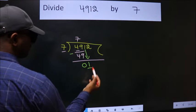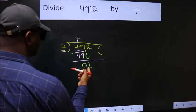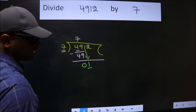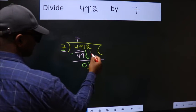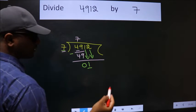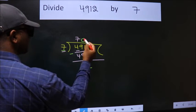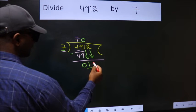Here we have 1, here 7. 1 is smaller than 7, so we should bring down the second number. And the rule to bring down the second number is put 0 here. Then only we can bring down this number.